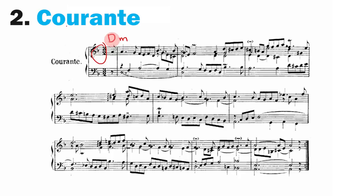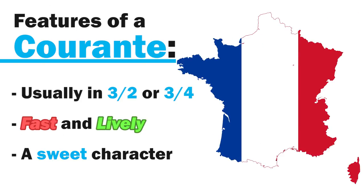The allemande is all business, but the courant, even though it's still fairly serious, feels like it just lets us in a little bit deeper. Some features of a courant: they're usually in triple meter — 3/2 or 3/4 — they tend to be faster than the allemande, and they have a sweet character. And sweet is a confusing word when referring to something in a minor key — I would almost say more melancholic or solemn.